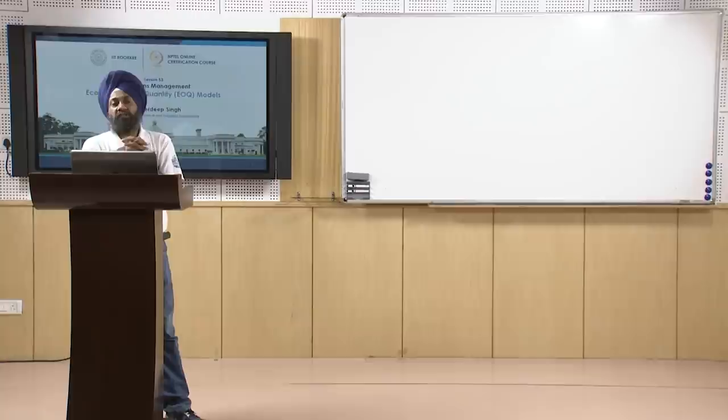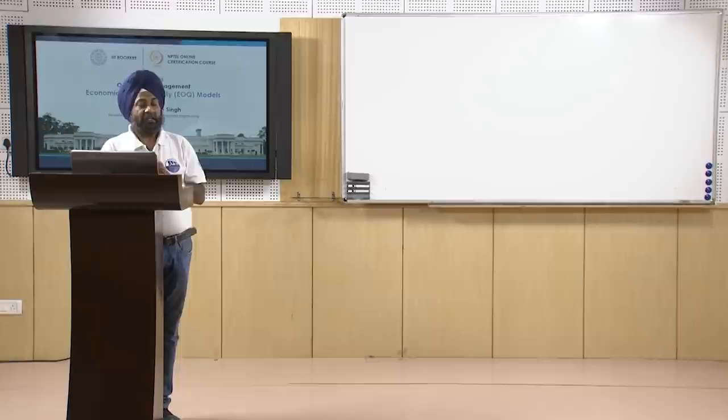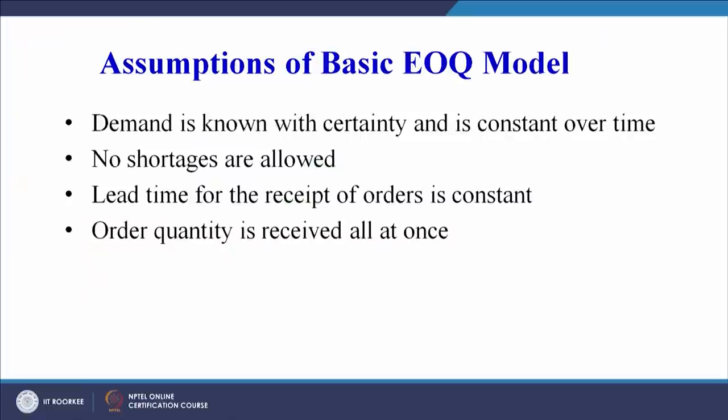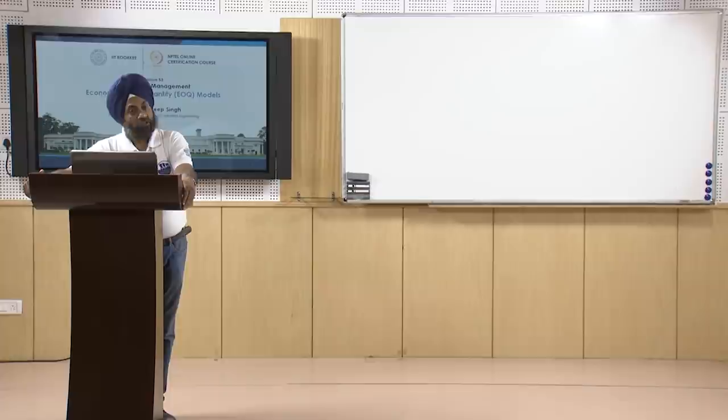Under these assumptions, the economic order quantity model has been developed. If this type of scenario exists in the organization, it is straightforward to calculate what the economic order quantity will be. To summarize: demand is known with certainty and is constant over time; no shortages are allowed; lead time for receipt of orders is constant; and order quantity is received all at once.